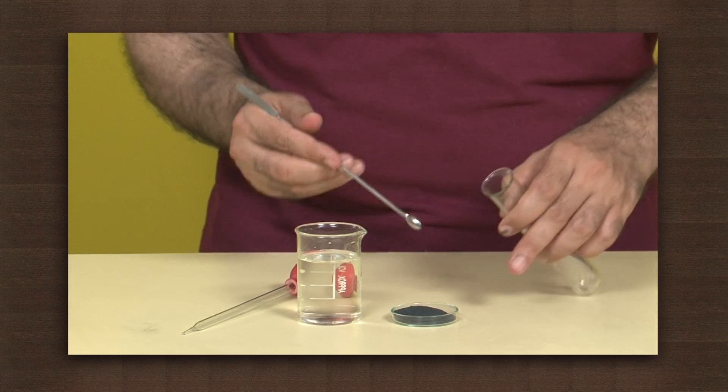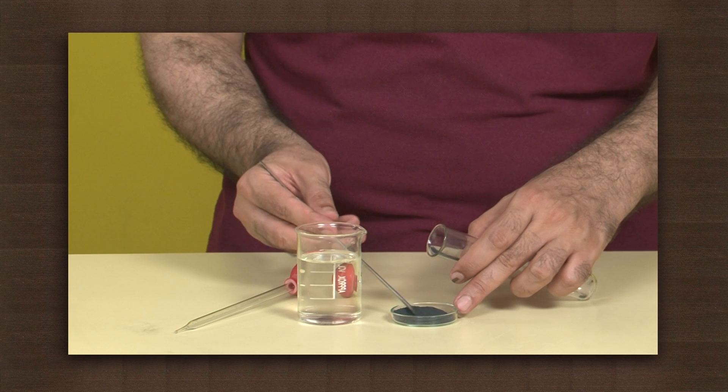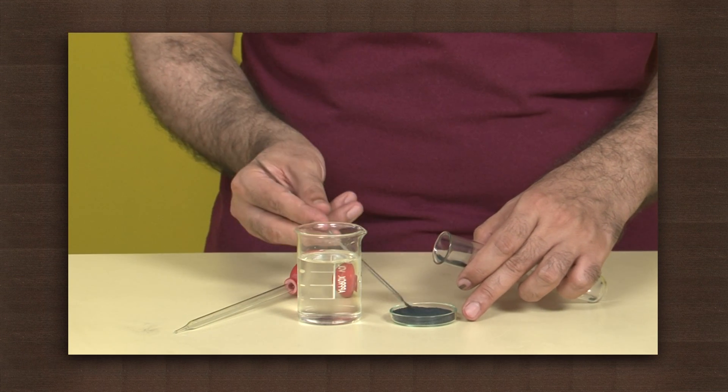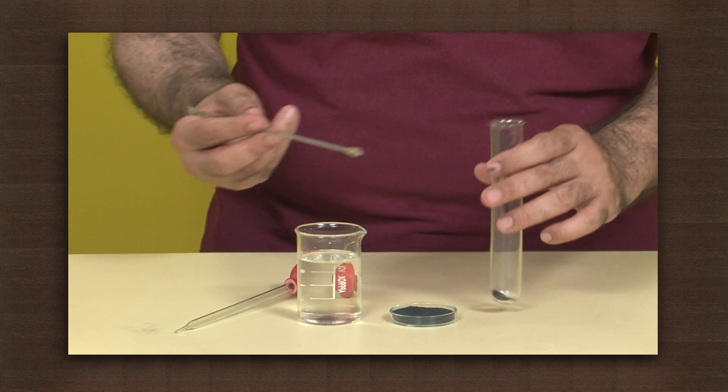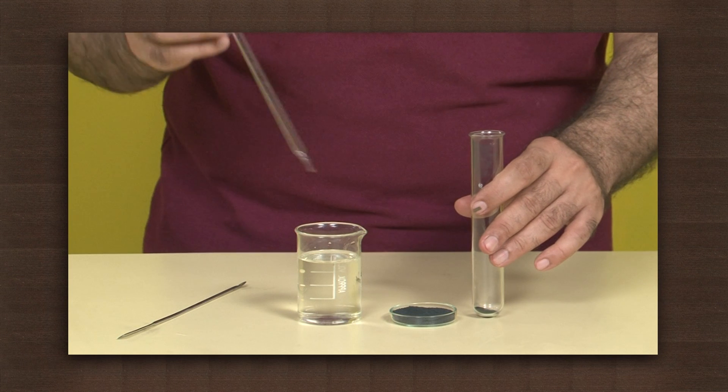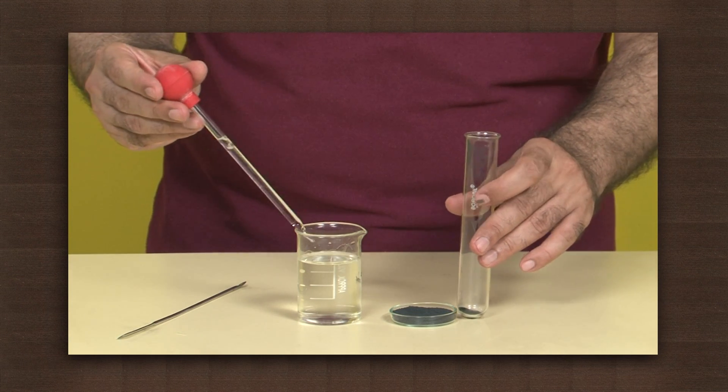Take some copper oxide in the test tube, add dilute hydrochloric acid to it, drop by drop, and shake.